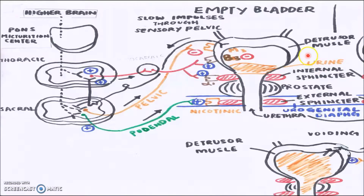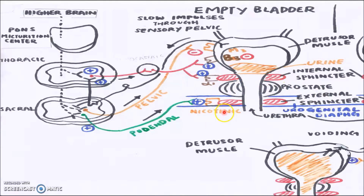Let's look at what receptors control the contraction or relaxation of the muscles, which in turn control the elimination of urine. At the detrusor muscle, there are two receptors: one is the muscarinic-3 receptor, and the other is the beta-3 receptor. At the internal sphincter, there is the alpha-1 receptor. At the external valve and external sphincter, there is the nicotinic receptor. All these receptors receive signals from the central nervous system to control the storing and elimination of urine.